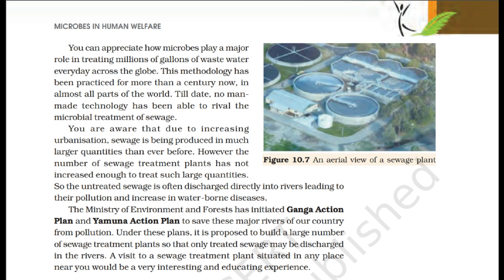Due to increasing urbanization, sewage is being produced in much larger quantities than ever before. However, the number of sewage treatment plants has not increased enough to treat such large quantities. So untreated sewage is often discharged directly into rivers, leading to their pollution and increase in waterborne diseases. The Ministry of Environment and Forests has initiated the Ganga Action Plan and Yamuna Action Plan to save these major rivers from pollution, proposing to build a large number of sewage treatment plants so that only treated sewage may be discharged into rivers.